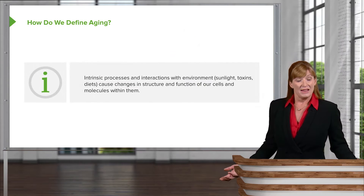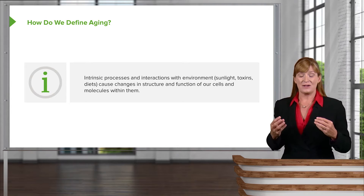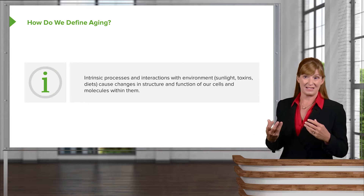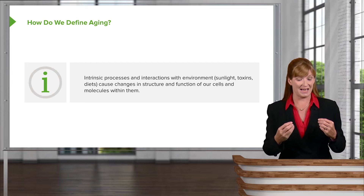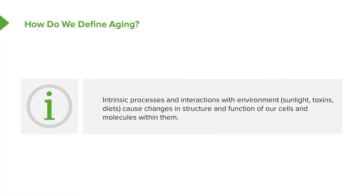Let's think about the idea that it's an intrinsic process where we have interactions with environment — things like sunlight and toxins and the things that we consume in our diets — that cause changes in structure and function of our cells and all of the molecules within them. If you could think for a moment about all of the things that you know that could contribute to cellular aging, what sort of things would you come up with?